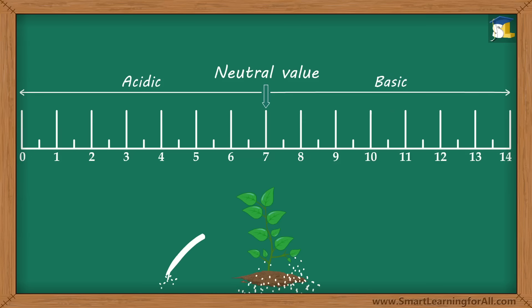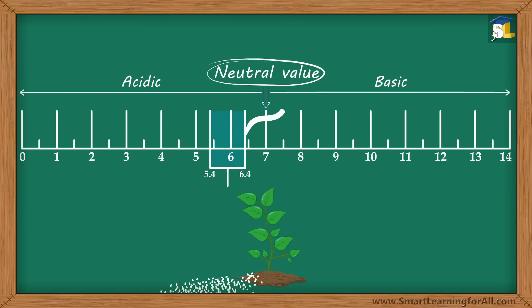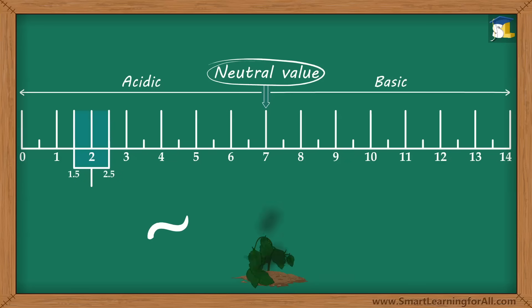The pH value of ideal soil is usually close to neutral. It ranges from about 6.5 to 7.5. If we don't maintain this pH, growth of most of the plants is adversely affected.